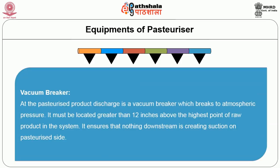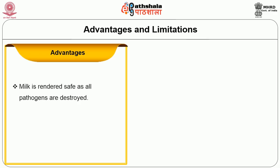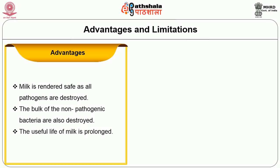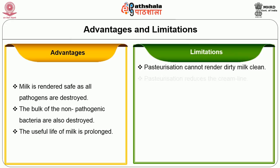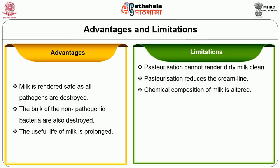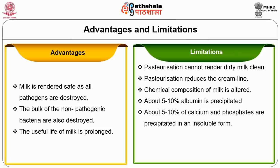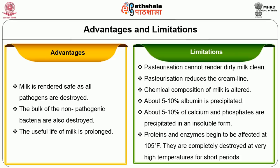A vacuum breaker is located at the pasteurized product discharge and must be located greater than 12 inches above the highest point of raw product in the system, ensuring that nothing downstream creates suction on the pasteurized side. Advantages of pasteurization: milk is rendered safe as all pathogens are destroyed; the bulk of non-pathogenic bacteria are also destroyed; and the useful life of milk is prolonged. Limitations: pasteurization cannot render dirty milk clean; it reduces the cream line; the chemical composition of milk is altered — about 5–10% of albumin is precipitated, about 5–10% of calcium and phosphate are precipitated in insoluble form, and proteins and enzymes begin to be affected at 105°F and are completely destroyed at very high temperatures for short periods.